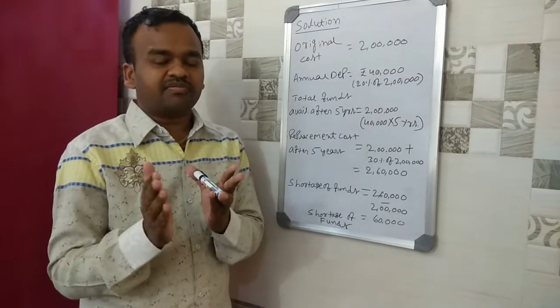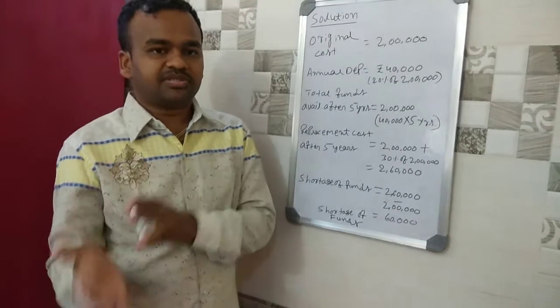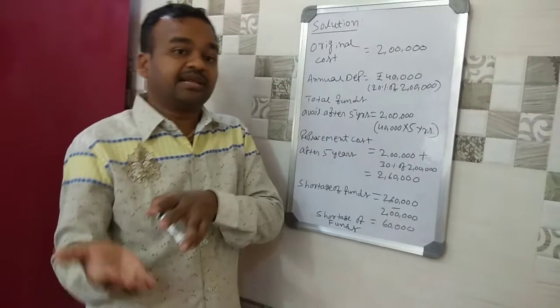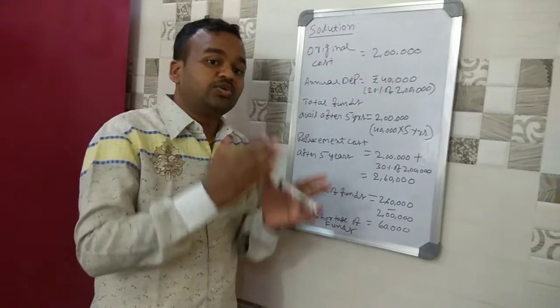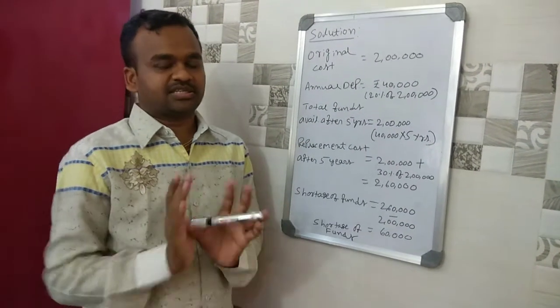This is the method of charging depreciation and replacing the new asset with the existing asset. After 5 years, charging depreciation on the machine, the total depreciation fund accumulated equals the original cost of Rs. 2,00,000 — that is, Rs. 40,000 per year for 5 years.